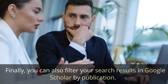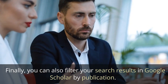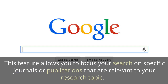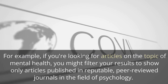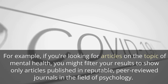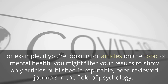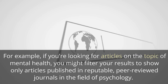Finally, you can also filter your search results in Google Scholar by publication. This feature allows you to focus your search on specific journals or publications that are relevant to your research topic. For example, if you're looking for articles on the topic of mental health, you might filter your results to show only articles published in reputable, peer-reviewed journals in the field of psychology.